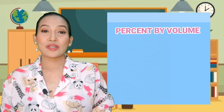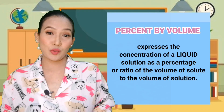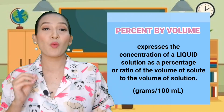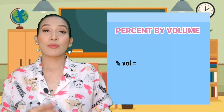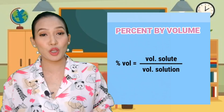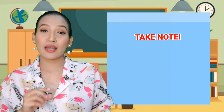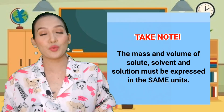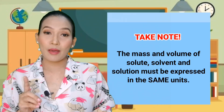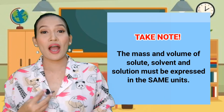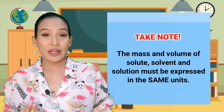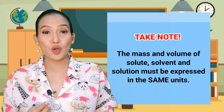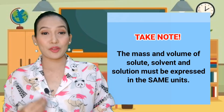Similarly, percent by volume expresses the concentration of a liquid solution as a percentage of the volume of solute to the total volume of the solution, or grams per 100 ml. It can be calculated through the equation: percent by volume equals volume of solute divided by volume of solution times 100. Take note: when using these equations, the units of solute, solvent, or solution must be the same — so that you can cancel same units using these equations.